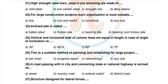Question 21: High strength steel parts used in pre-stressing are made of. Options: mild steel, low carbon steel, wrought iron, alloy steel. Correct answer is alloy steel. Question 22: For large construction projects, which organization is most suitable? Options: line and staff, functional, anyone. Correct answer is line and staff.